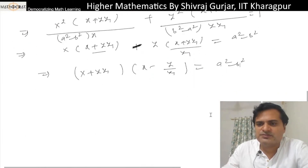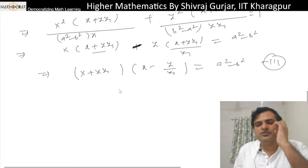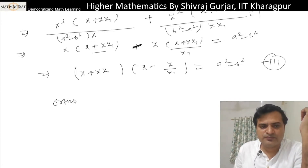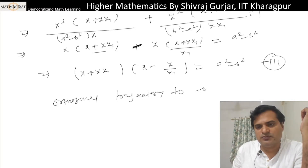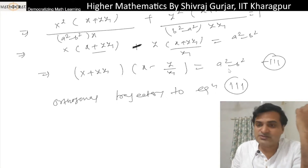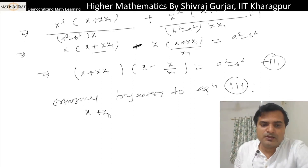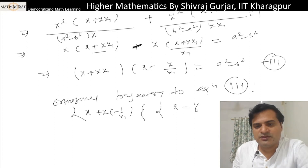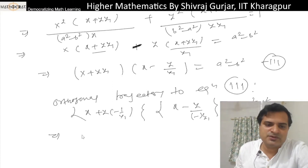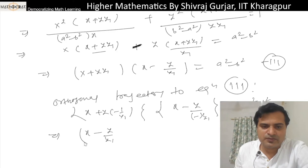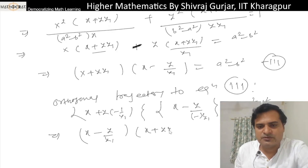Let's call this equation 3. For the orthogonal trajectory of equation 3, y₁ will be replaced by minus 1/y₁. So x minus y·y₁ becomes y₁, and x plus y·y₁ becomes x minus y/y₁, which equals a² minus b². Let's call this equation 4.